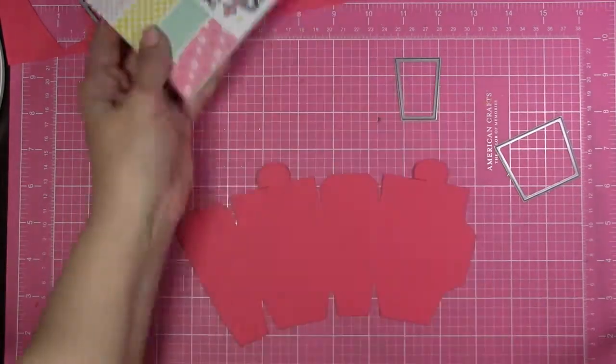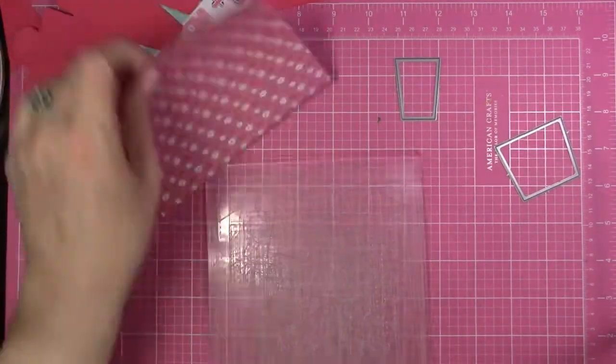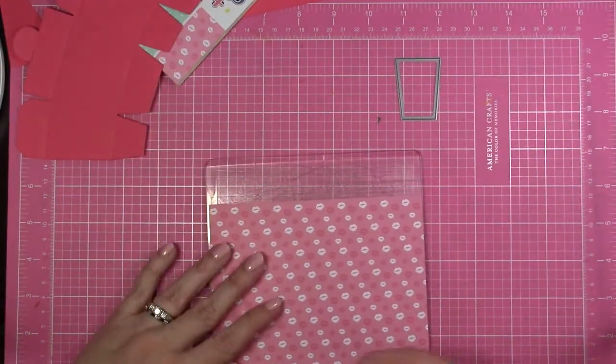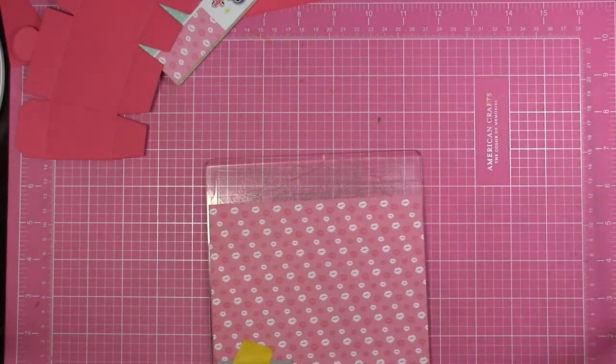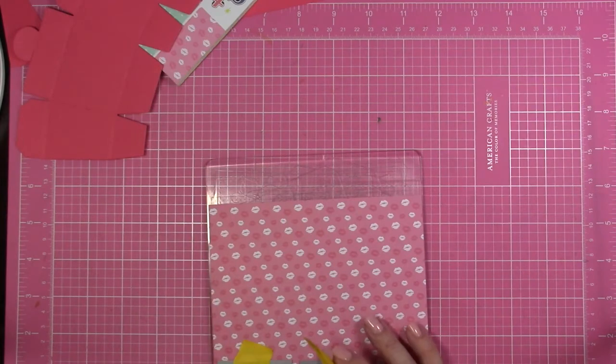They are perfectly cut to leave a little bit of a border around the side, and I'm going to be using some of the Hugs and Kisses pattern paper. I'm using this pink piece here that has some little kisses on it, or some lips I should say.